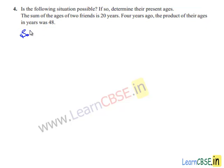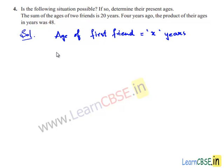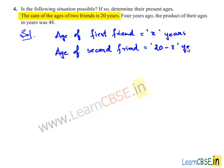Let us see the solution. Assume age of first friend is equal to x years. Then, age of second friend becomes 20 minus x years, because sum of their ages is equal to 20 years.